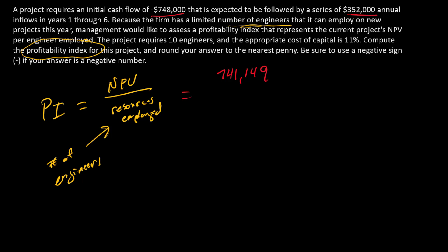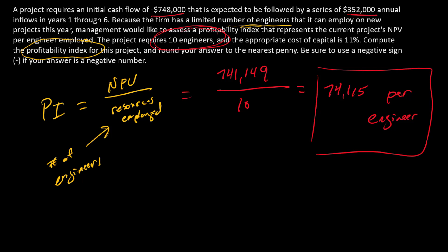We're really interested in how much NPV we get per engineer employed in the project. There are 10 engineers in the project, so we take that NPV, divide it by 10, and we end up with $74,115 per engineer. And that's the profitability index.